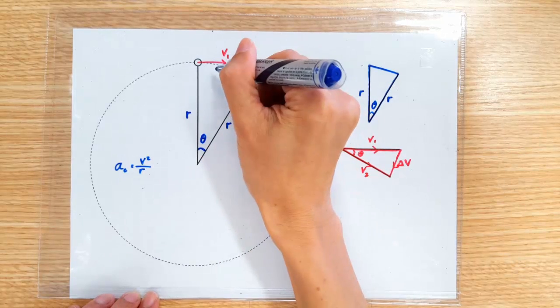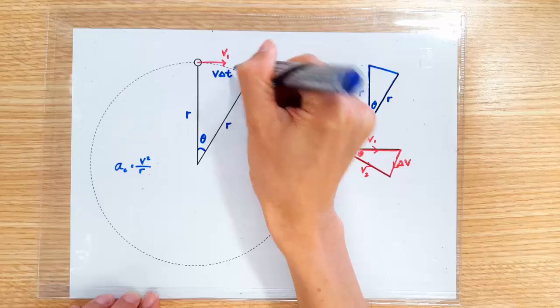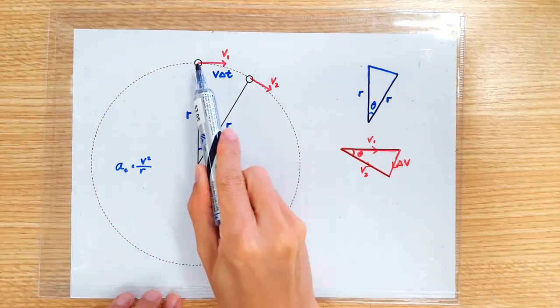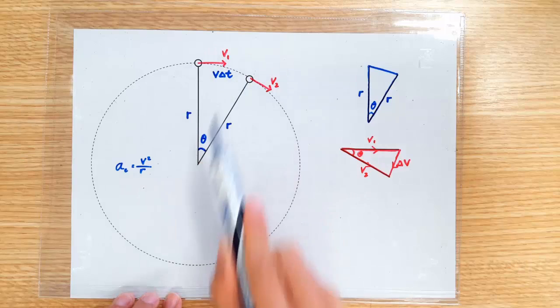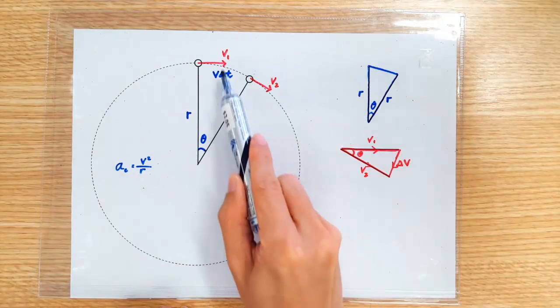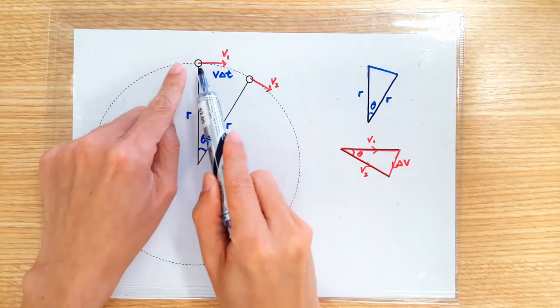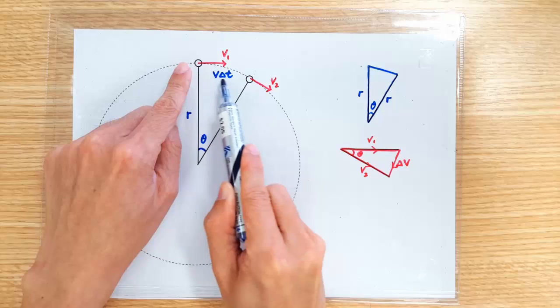...should be exactly equal to v delta t. So, delta t is the amount of time taken for the object to go from here to here. And v is just the speed. V is the same as v1, it's the same as v2, because this guy is going at a constant speed. So, the arc length is v delta t.